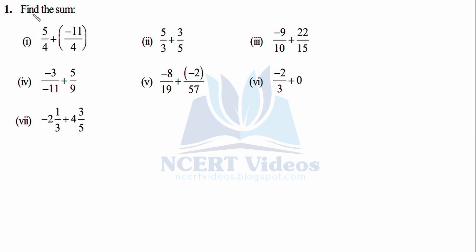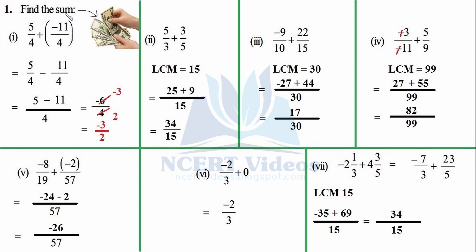Question 1: Find the sum. We have to find the addition of the following rational numbers. Note that 'sum' in mathematics has two definitions: the first is addition, which we are going to do in these questions, and the second is the principal that you deposit in your bank on which the bank gives you periodic interest.